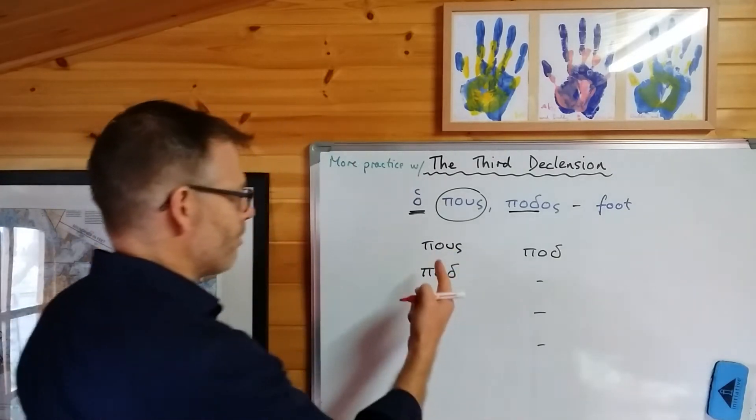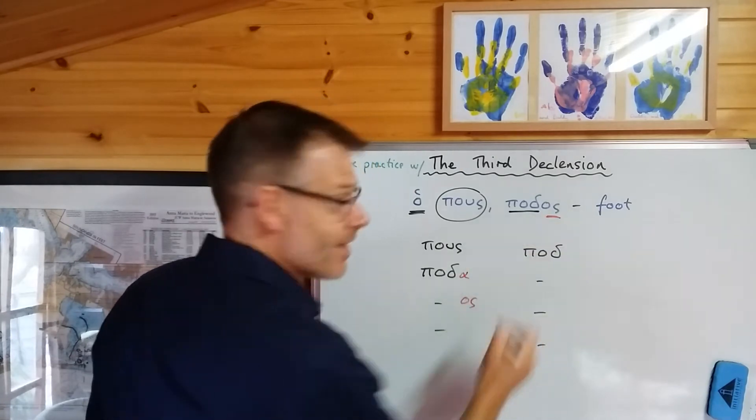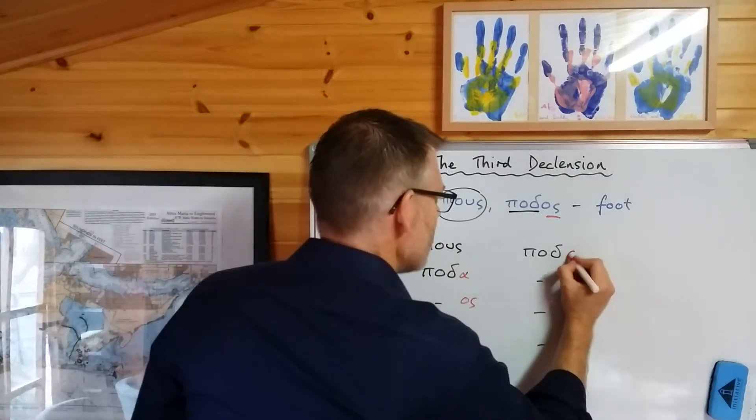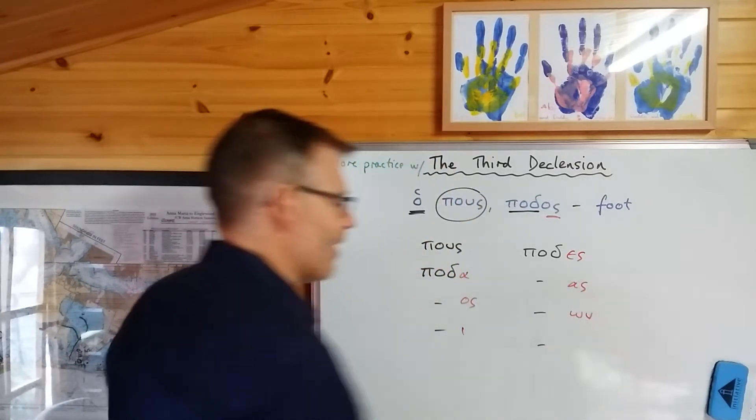Because here's the stem in the genitive singular form and it ends with a consonant, so it's going to be like astēr, which goes astēr, astera, asteros, asteri, asteres, asteras, asterōn, asterosin. So we're just going to do that right here, except we need to remember pous, that's the nominative singular form. So we're ready to go, we can now generate this declension very easily. Ready? Pous, nominative singular.